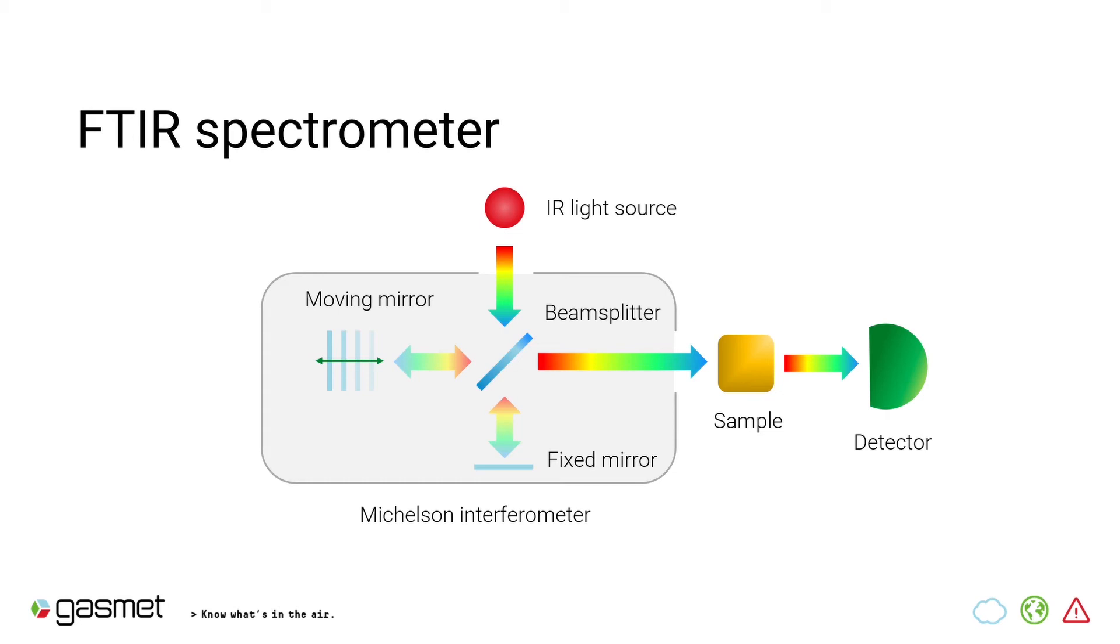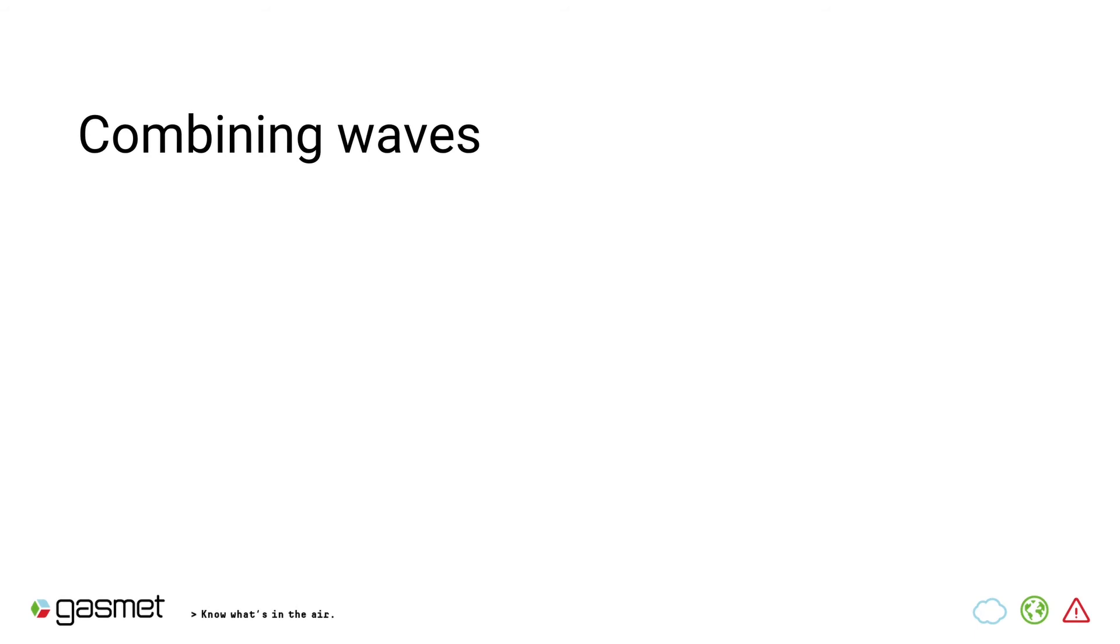Now, this is what we call a single beam operation. So, to get a reading of what happens to light without the sample, first we have to do a measurement without a sample. With our devices, this is normally done once a day. After this background measurement, we will compare all our other measurements to that background. So, what is accomplished by measuring everything at once?